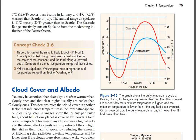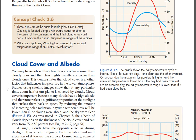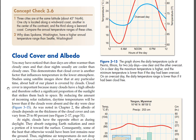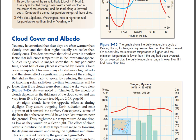Cloud cover and albedo. You may have noticed that clear days are often warmer than cloudy ones, and that clear nights usually are cooler than cloudy ones. This demonstrates that cloud cover is another factor that influences temperature in the lower atmosphere. Studies using satellite images show that at any particular time, about half of our planet is covered by clouds. Cloud cover is important because many clouds have a high albedo and therefore reflect a significant proportion of the sunlight that strikes them back to space. By reducing the amount of incoming solar radiation, daytime temperatures will be lower than if the sky were clear (Figure 3-15).